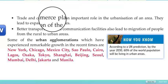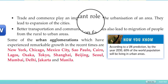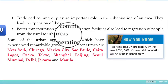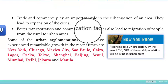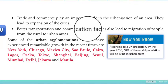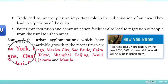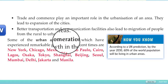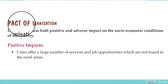Trade and commerce play an important role in urbanization, leading to expansion of cities as various people come and settle there permanently. Better transportation and communication facilities also led to migration from rural to urban areas. Examples of urban agglomerations that have experienced remarkable growth include New York, Chicago, Mexico City, São Paulo, and Cairo. Urban agglomeration refers to when more than one urban area is compacted in a place.